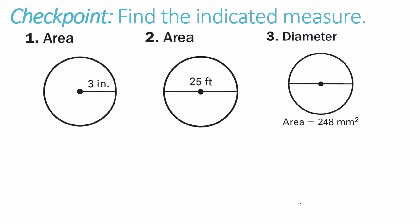Checkpoint problems 1, 2, and 3 are yours. For each, find the indicated measure. Problem 1: find the area of the circle when the radius is 3 inches. Problem 2: find the area of the circle when the diameter is 25 feet. Problem 3: find the diameter of the circle when the area is 248 square millimeters.